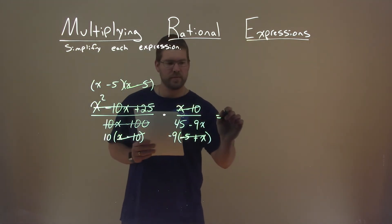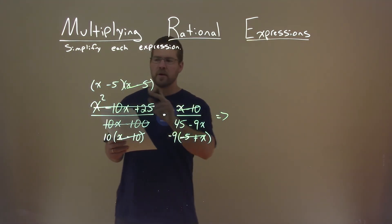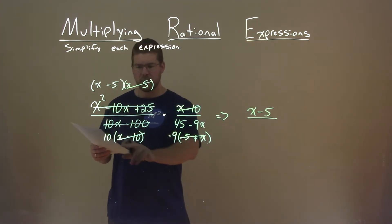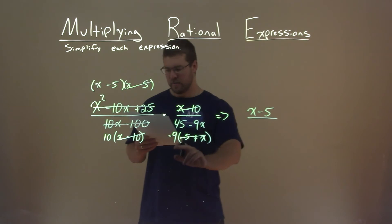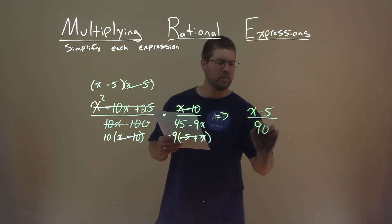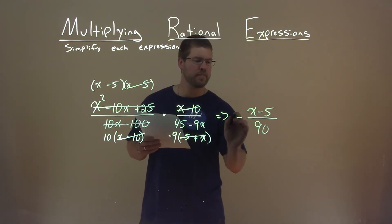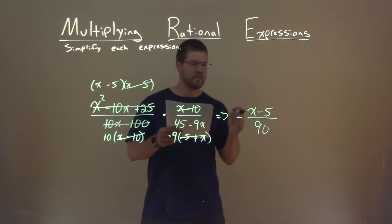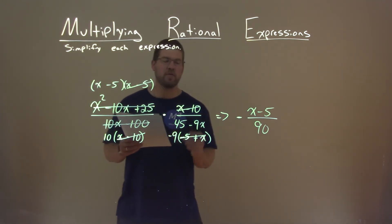So what are we left with? Well, our numerator, we have an x minus 5. The denominator, we have 10 times negative 9, which is negative 90. Let's put the negative out here, out front. And there we have it. Negative x minus 5 divided by 90 is our final answer.